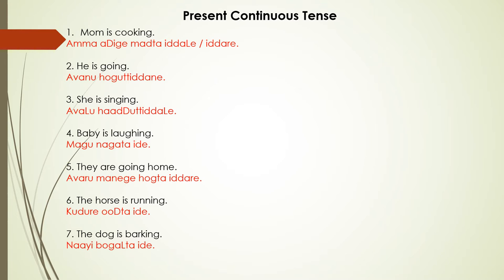If we want to say 'mom is cooking' — mom is called amma. Adige or aduge, both mean the same. So the sentence is: amma aduge marta iddale. Iddale means singular and formal.